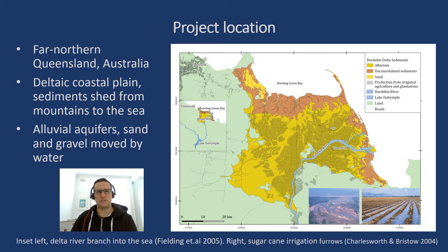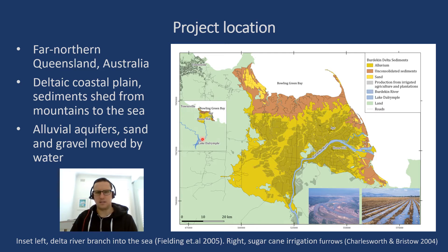The project location is in far north Queensland, Australia. Using the laser pointer to show the location: Queensland, the Coral Sea with the Great Barrier Reef, and here we have an inland mountain chain. The project focuses on recharge in a delta — here is the delta in the bright colours — and Lake Dalrymple, which is the primary source of the Burdekin River flowing north.